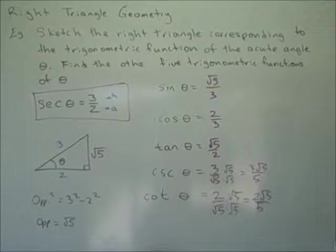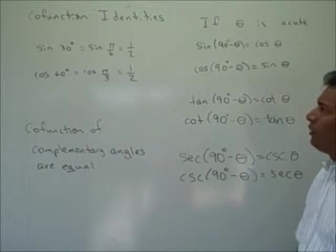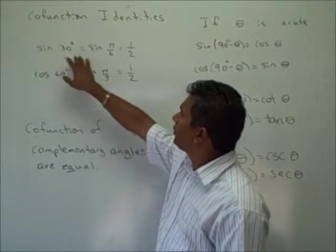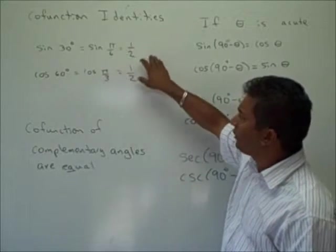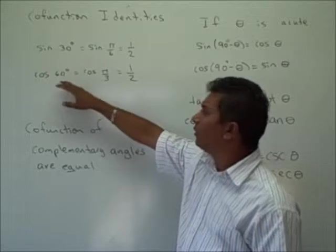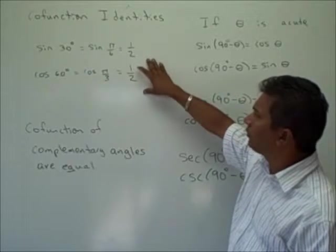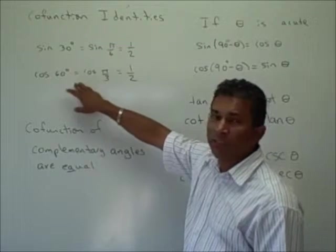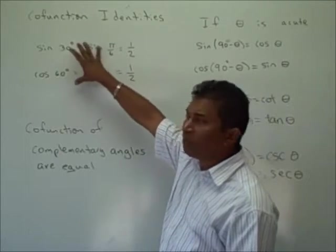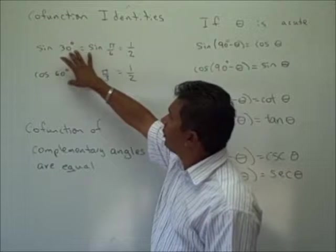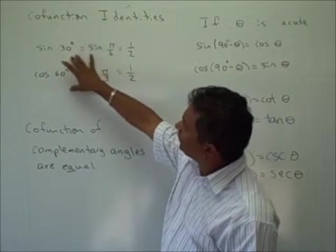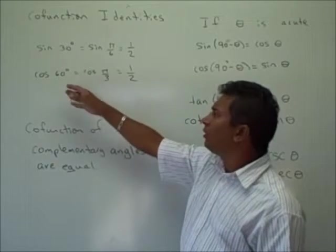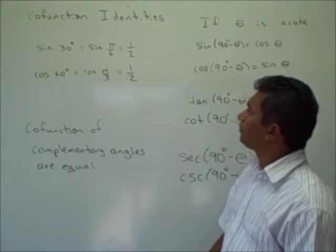Now we'll look at co-function identities. We know that the sine of 30 degrees — the same as pi over 6 — is 1 half. We also know that the cosine of 60 degrees — the same as pi over 3 — is 1 half. So the sine of 30 degrees equals the cosine of 60 degrees; these are complementary angles since they add to 90 degrees. From this we can realize that co-functions of complementary angles are equal.